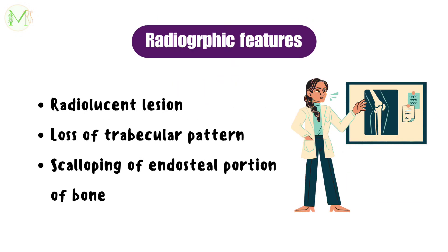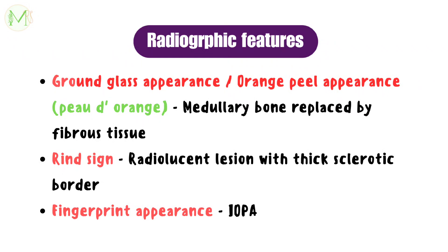Radiographically, it appears radiolucent with loss of trabecular pattern and scalloping of the endosteal portion of bone. Due to replacement of medullary bone by fibrous tissue, it gets a ground-glass appearance or orange peel appearance. A rind sign is noted because of the radiolucent lesion with a thick sclerotic border. In intraoral periapical radiograph, a fingerprint appearance is seen.